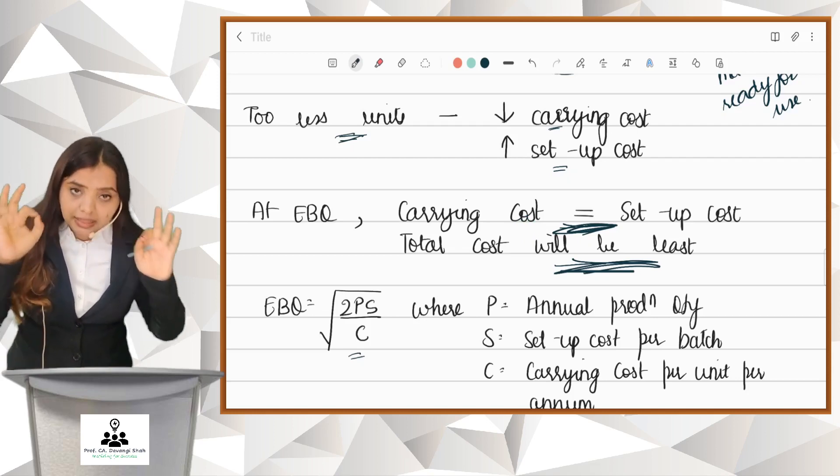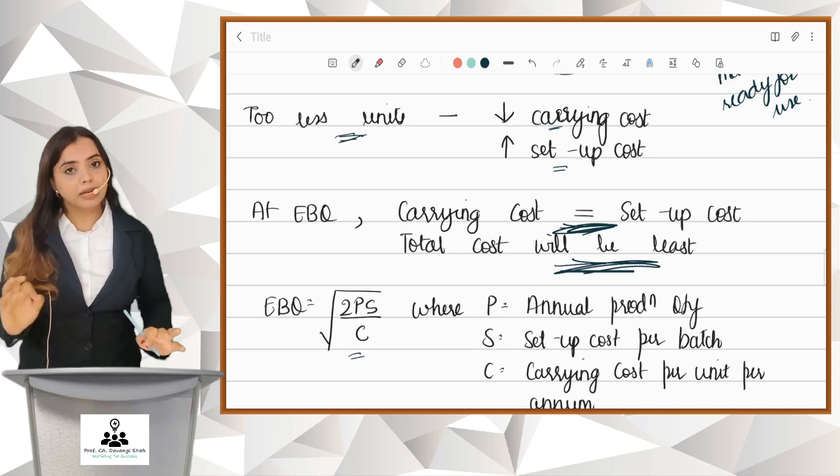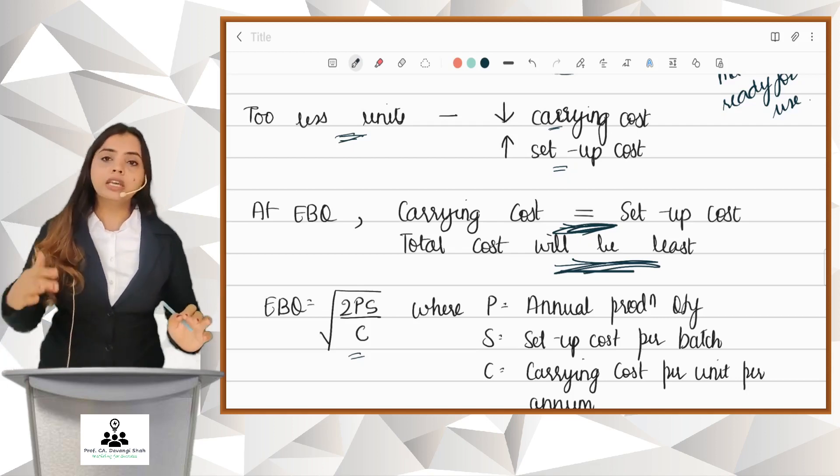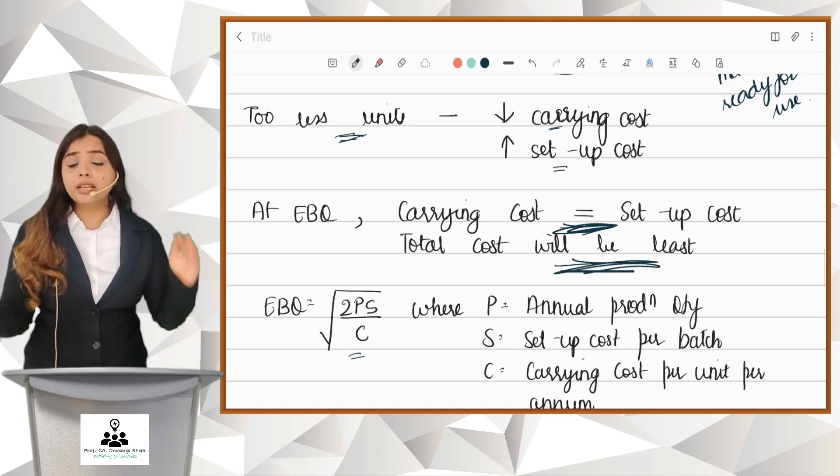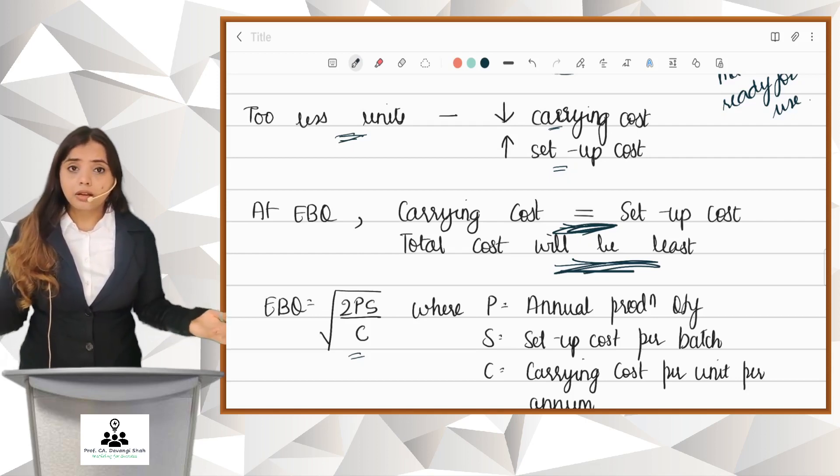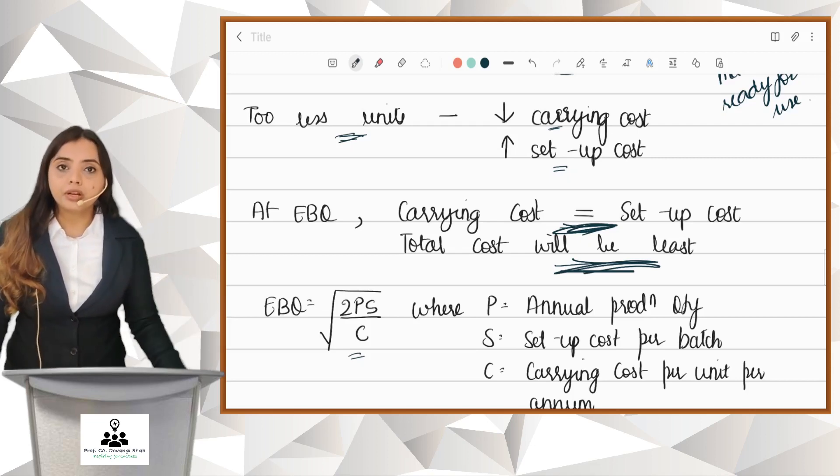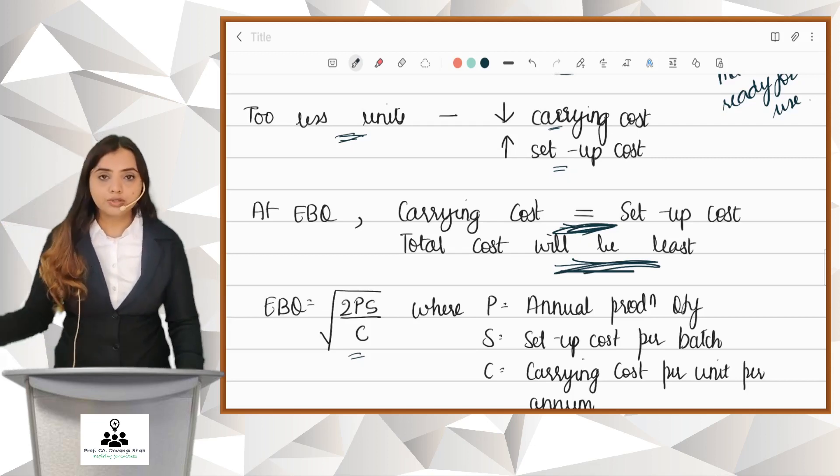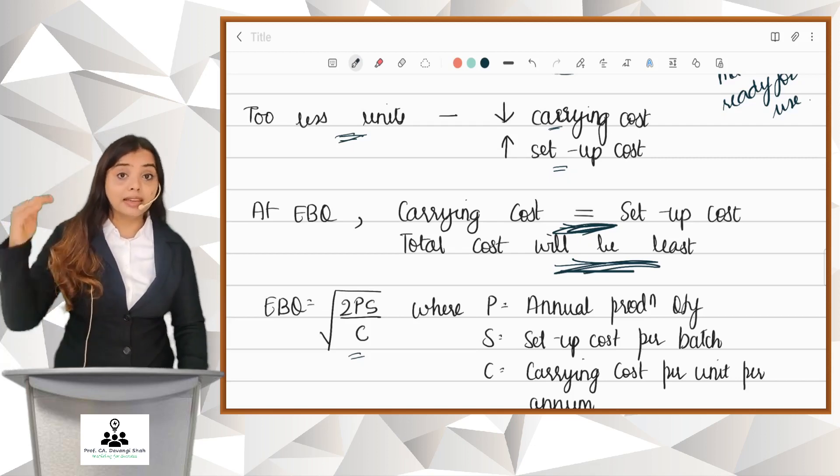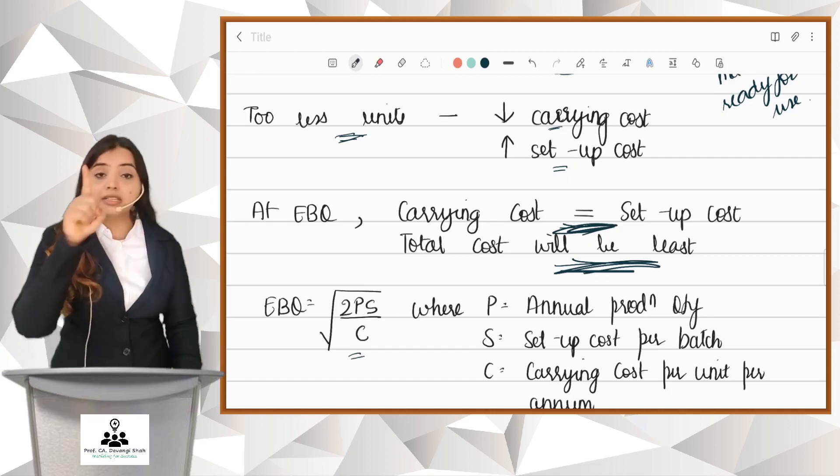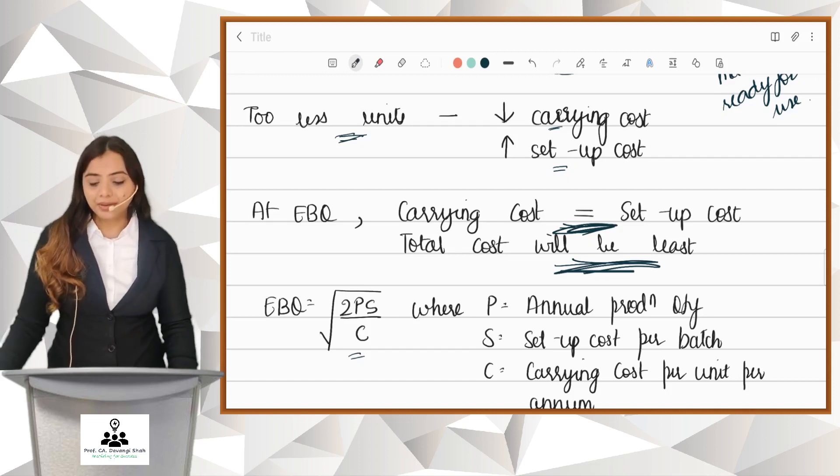Only that many units are to be produced per batch. Do not produce more than EBQ, do not produce less than EBQ. You have to produce only EBQ because only then your cost will be minimum. So now we know what is job costing, what is batch costing, and in a batch how many units are to be produced.